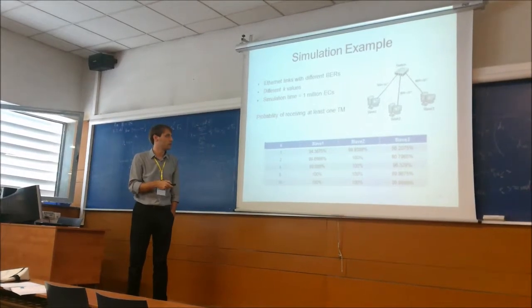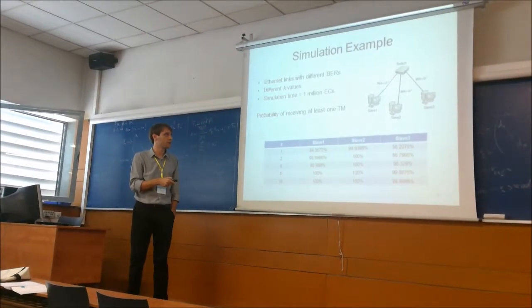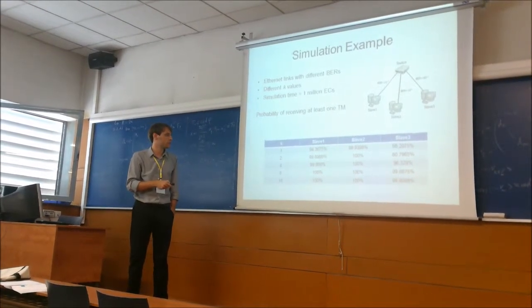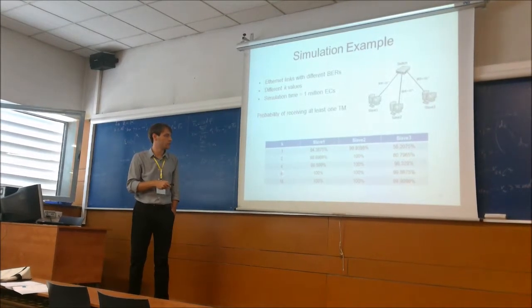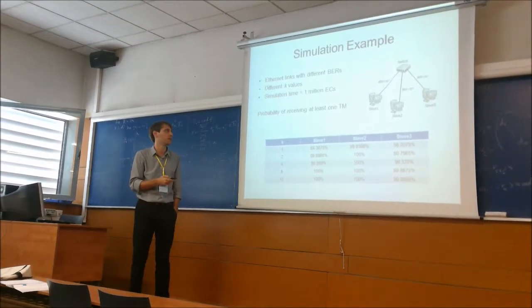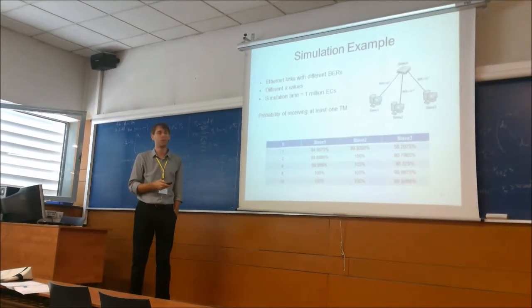So for instance, we know that with the error rate of 0.1, we need at least eight replicas, K equal to eight, to have at least one replica arrive, and then that our fault-tolerant mechanism will work.